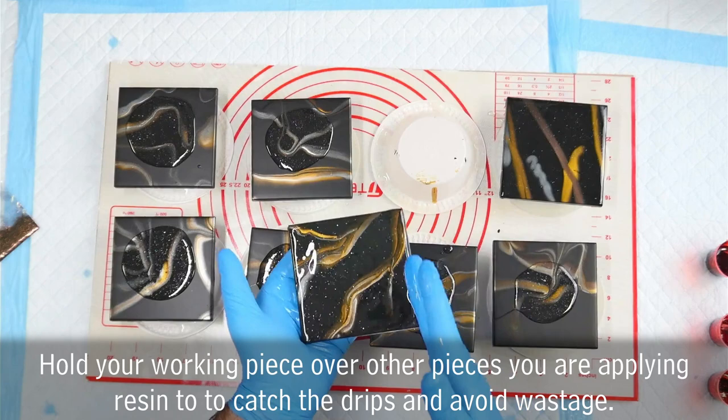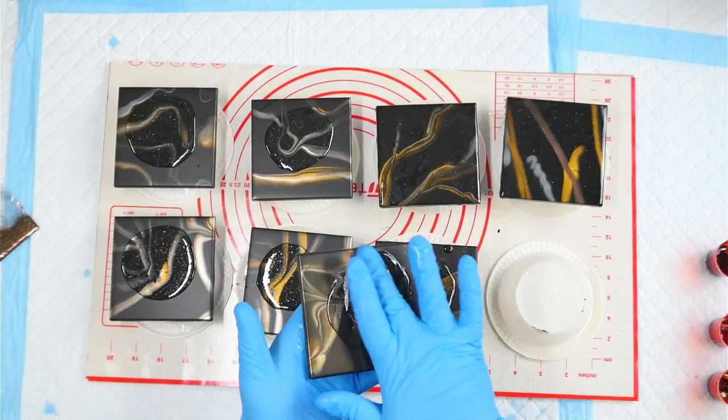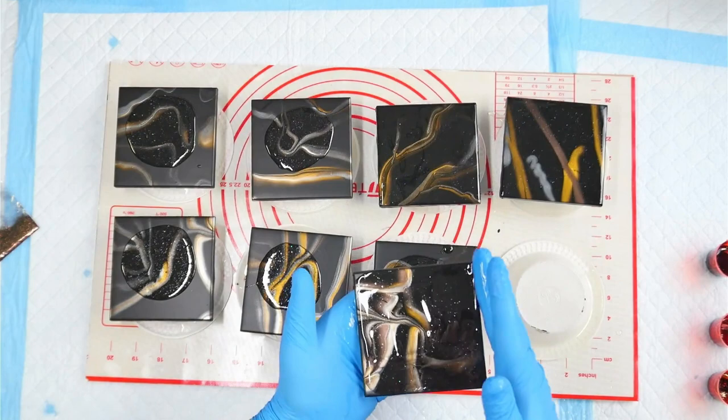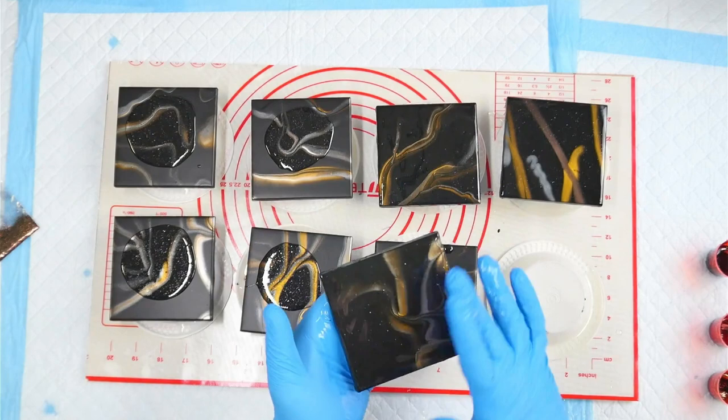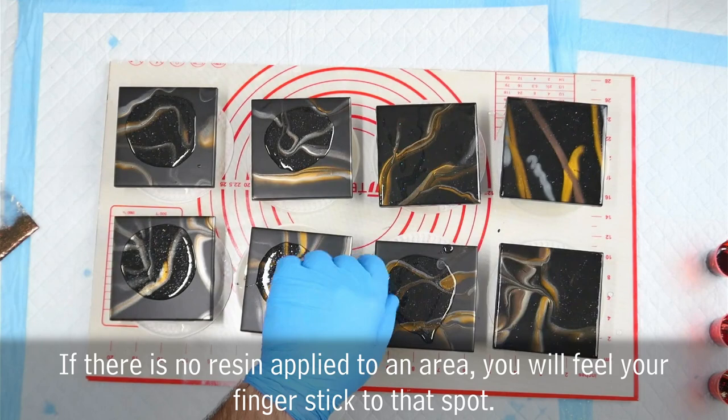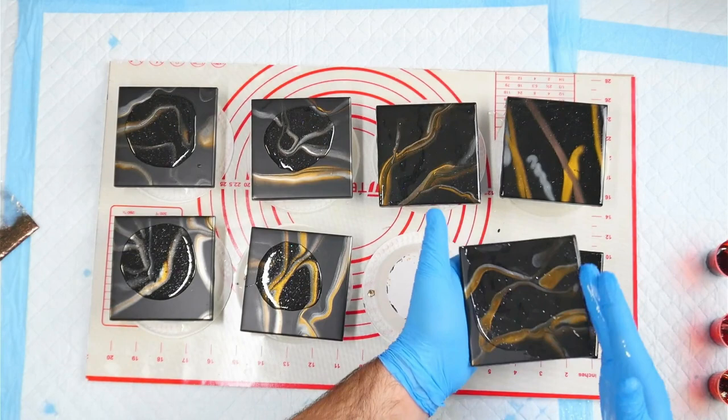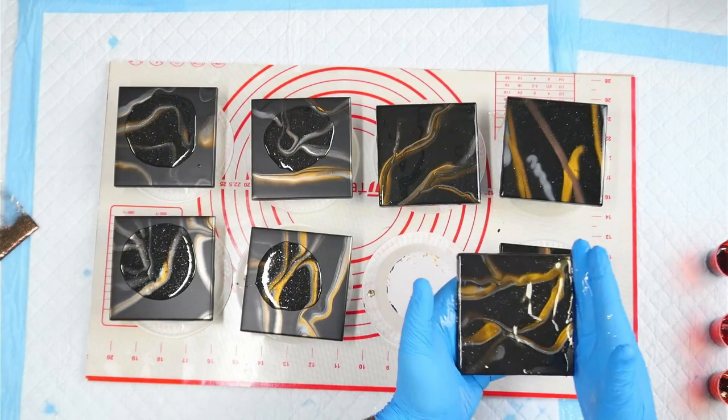So remember, we only mixed up 80 milliliters of resin total. And we're going to cover eight tiles. Plus we've got some in our little containers. Just working our way through this. And you just want to feel with your finger where the resin is going. If there's no resin in a certain spot, your finger will sort of get stuck as it snags the paint. And if it does that, you know you need to apply resin in that particular spot. And remember that resin will not flow where resin hasn't been previously.